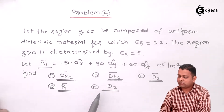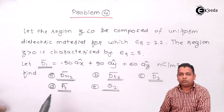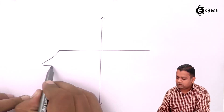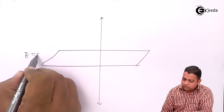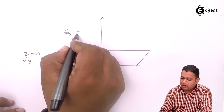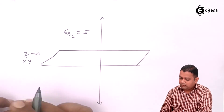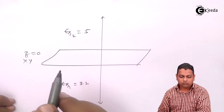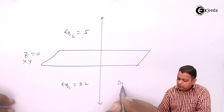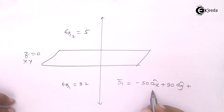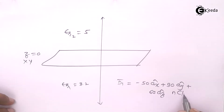We take help from boundary conditions and start solving part A through part E. We draw a diagram with the Z-axis perpendicular to the boundary. The boundary surface is the Z equals 0 plane, also called the XY plane. The region Z greater than 0 is characterized by epsilon_r2 equals 5, and Z less than 0 by epsilon_r1 equals 3.2. D1 bar equals minus 50 Ax cap plus 90 Ay cap plus 60 Az cap nanocoulombs per meter square.